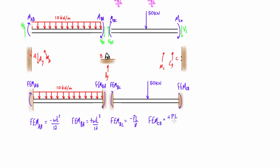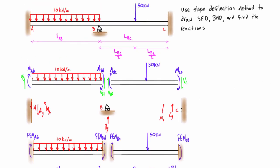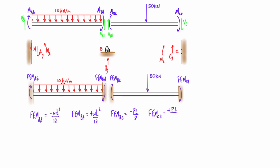In our problem, each span is 10 meters, so L_AB = 10 m and L_BC = 10 m, with half-spans of 5 m. We now have enough information to plug in: the distributed load w and length 10 m for span AB, and point load P with length 10 m for span BC. We calculate these fixed-end moments because they're part of the slope deflection equation, which we apply twice per span to get M_AB, M_BA, M_BC, and M_CB.